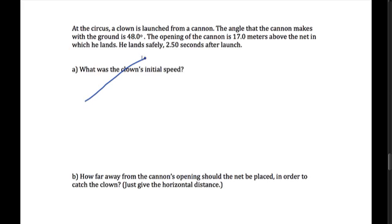It does not tell us how fast the clown was going. It's asking us for the initial speed. This represents the initial velocity vector. The magnitude of your initial velocity vector is the initial speed. So we want to find v naught.